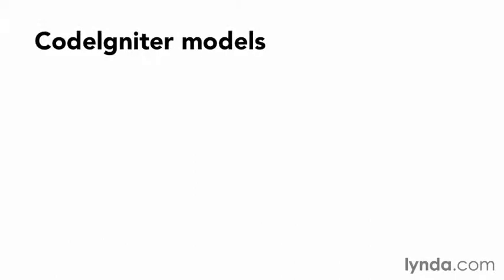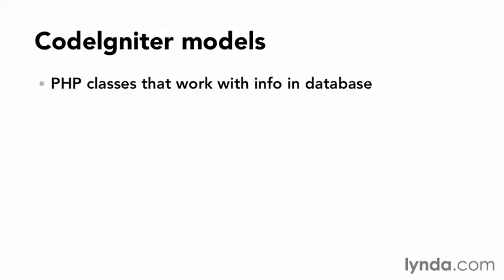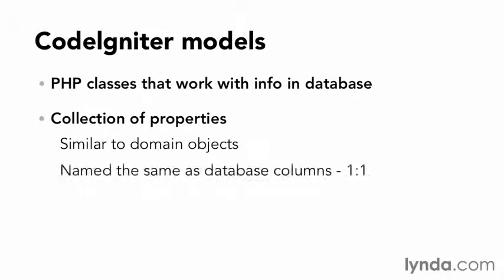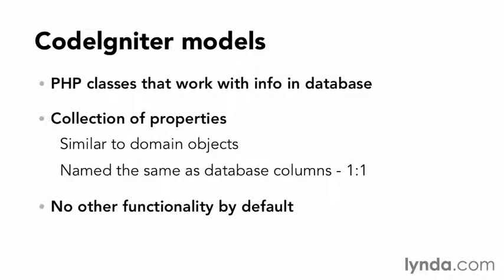CodeIgniter defines models as PHP classes that work with information in a database, which is pretty vague. Out of the box, they're treated just as a collection of properties, which is similar to a domain object. These properties are named exactly the same as the database columns, with a one-to-one relationship. CodeIgniter models contain no other standalone functionality by default.